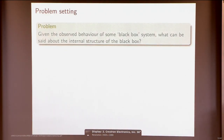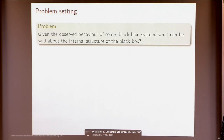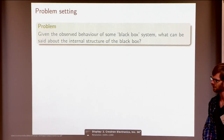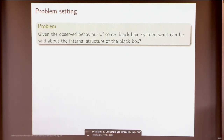The problem setting is this: if you are given the observed behavior of some kind of system which is a black box to you — you don't know what's inside, you only know the external observed behavior — then what can you say about the internal structure of the box, about what sort of network is inside?